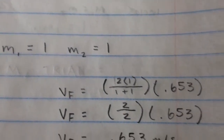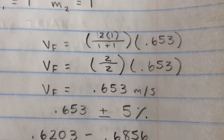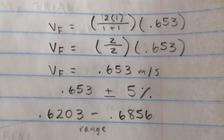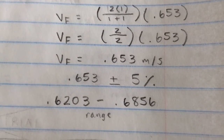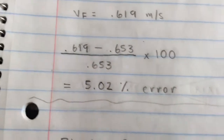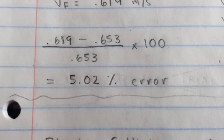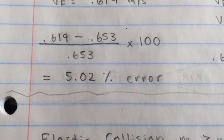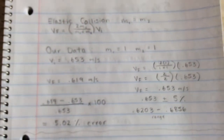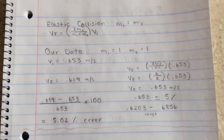If you plug those into the equation, you'll see that the velocity final should have equaled 0.653, but with a percent error of 5%. The range we found was 0.6203 to 0.6856, and when you plug our number into the percent error equation, you can see that it was a 5.02% error. This shows that our trial was 5.02% from being a perfect elastic collision.